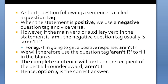Why is 'aren't I' correct? A short question following a sentence is called a question tag. When the statement is positive, we use a negative question tag, and when the statement is negative, we use a positive question tag. However, if the main verb or auxiliary verb in the statement is 'am,' the negative question tag is 'aren't I.' For example: 'I am going to get a positive response, aren't I?'